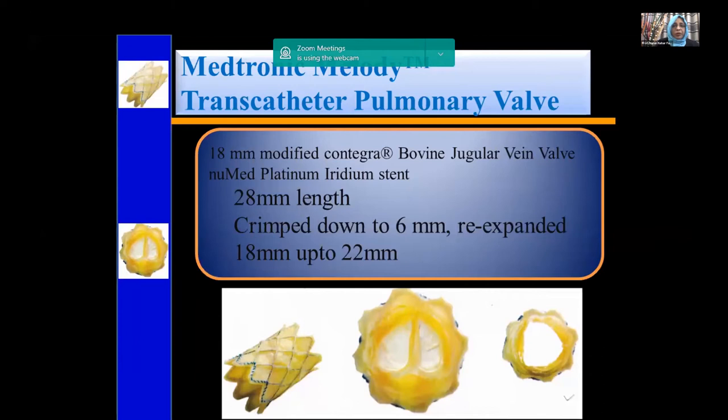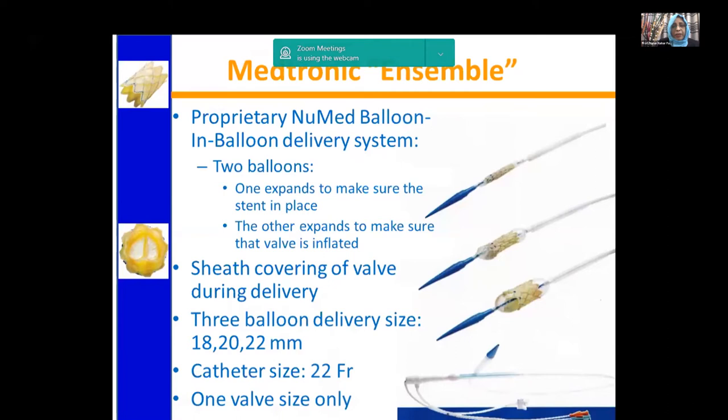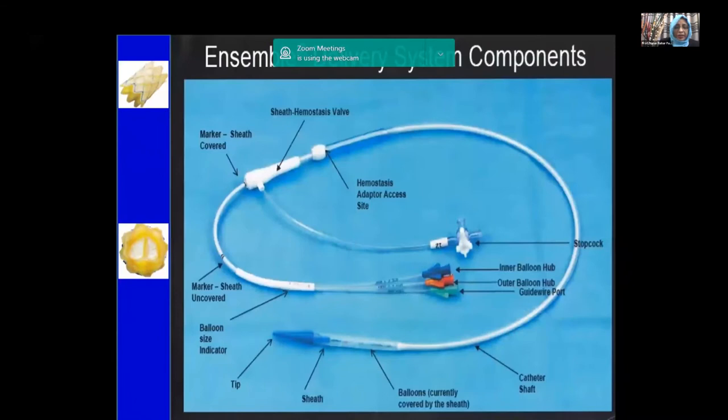The Medtronic Melody transcatheter pulmonary valve is actually a Contegra type of valve made from a bovine jugular vein with a length of about 28 mm. It can be trimmed down to 6 mm and then re-expanded into three sizes — 18, 20, and 22 mm — using the Ensemble delivery system. The Ensemble delivery system has three ports: one for the inner balloon, one for the outer balloon, and one for the wire. This valve is inflated with the BIB (balloon-in-balloon) balloon.